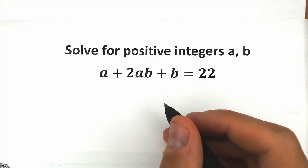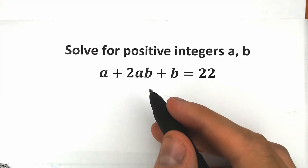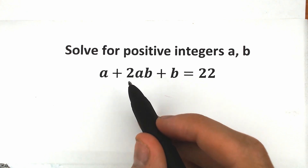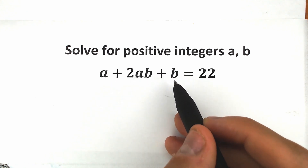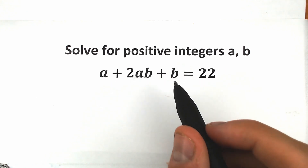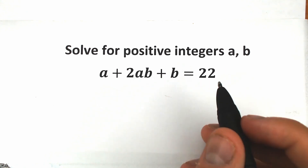Hello everyone, happy to see you here, welcome back to my channel. I'm Asimatics and today we're going to solve this really interesting challenge: a plus 2ab plus b equals 22, and we need to find our positive integer solution. So let's do this.